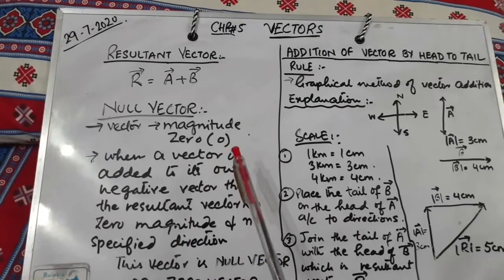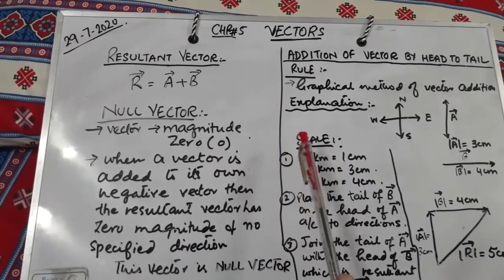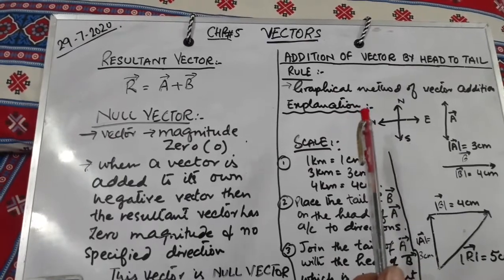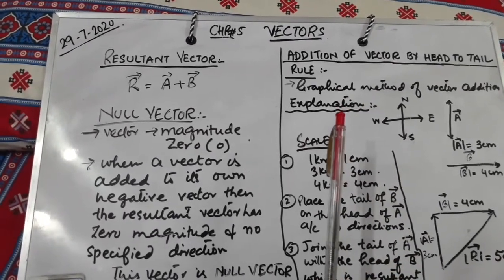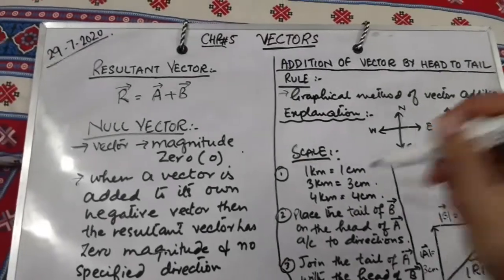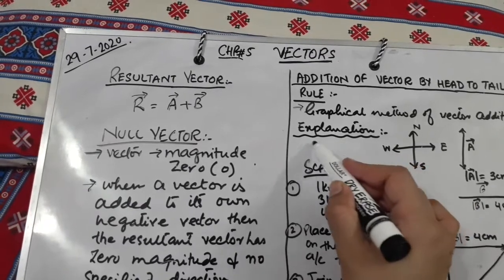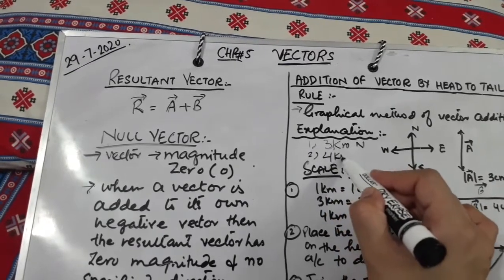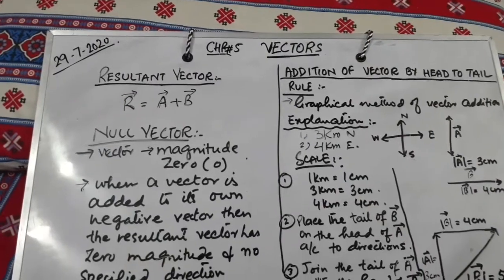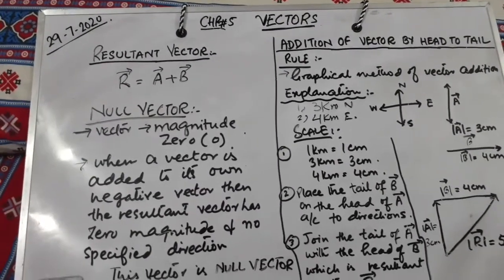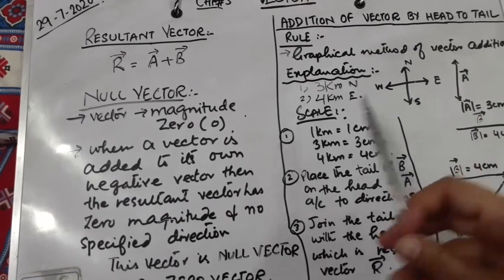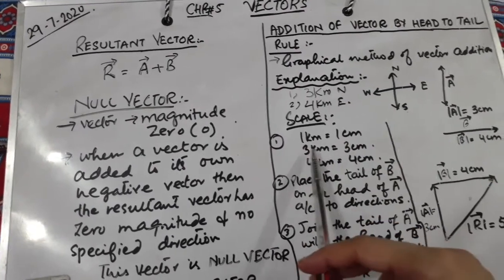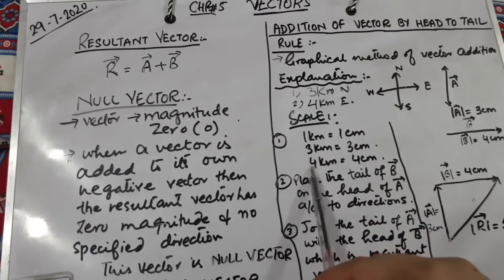Now let's work through an example. We are going to add two vectors: the first is 3 kilometers towards north, and the second vector is 4 kilometers towards east. We choose a scale where 1 kilometer equals 1 centimeter. So 3 kilometers equals 3 centimeters, and 4 kilometers equals 4 centimeters.